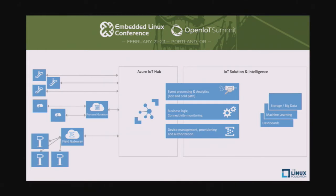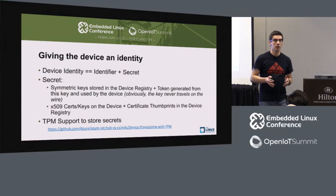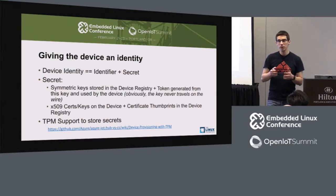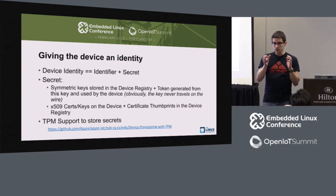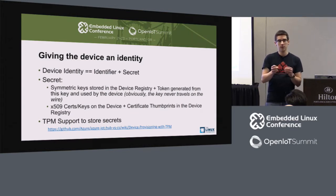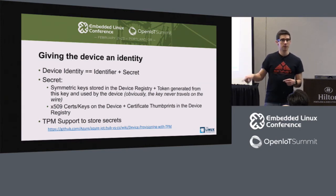We're going to start on the device side and talk about the different primitives to talk to Azure IoT Hub. In order to talk to Azure IoT Hub, the first thing we need from you is a device identity. The device identity for us is basically two things: a unique identifier, and a secret that can be used to encrypt communications between your device and the cloud. Everything has to go over TLS — we do not do unsecure stuff.